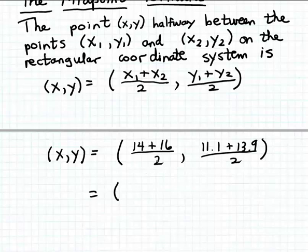14 plus 16 is 30, divided by 2 gives us 15 — which is indeed the x value we wanted to predict the y value for. And 11.1 plus 13.9 is 25, and dividing that by 2 gives us 12.5.